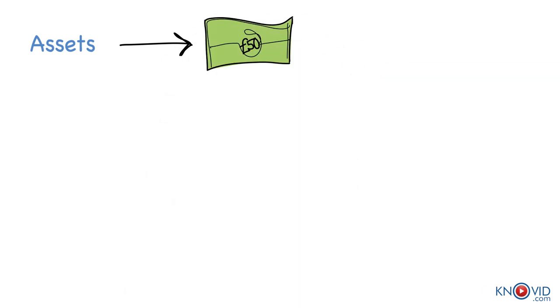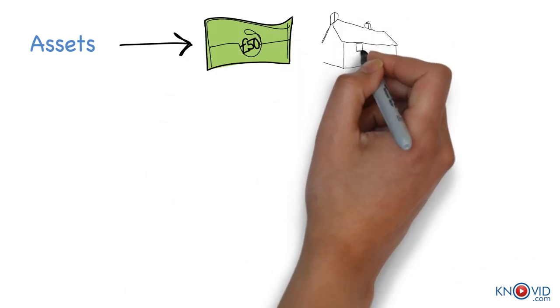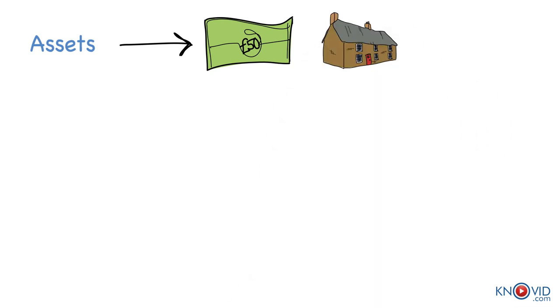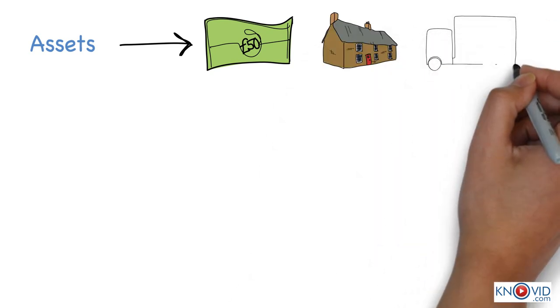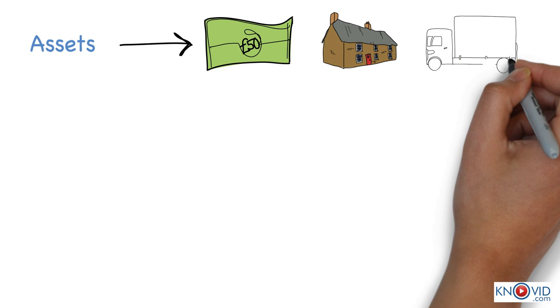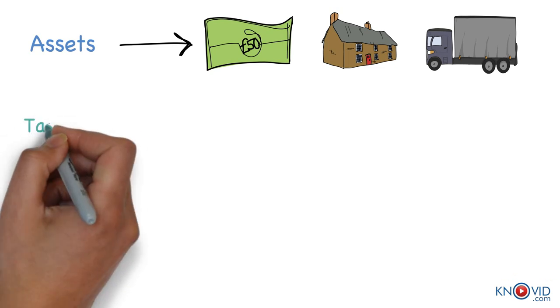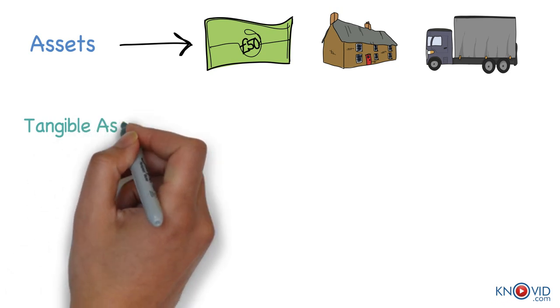Cash in hand, plant and machinery, furniture, bank balance, debtors, bills receivable, stock of goods, investments, goodwill are all some examples for assets.